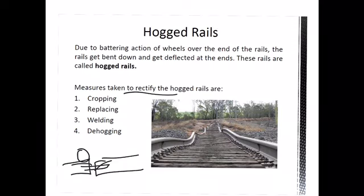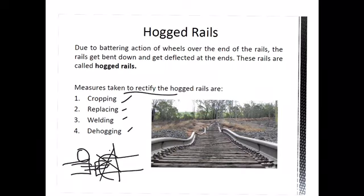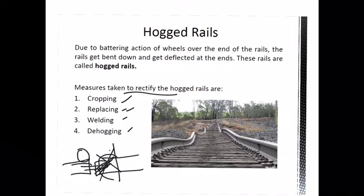The remedial measures to rectify hogged rails include: cropping, replacing, welding, and dehogging. In cropping, the hogged part is cut off and fresh holes are made for fixing new fish plates. In replacing, the hogged rail section is replaced with new rails, though this is highly uneconomical. In welding, the hogged rails are brought to level by welding over the worn-out or bent portion at the ends. The last method, dehogging, involves straightening the ends using equipment called a jim crow or dehogging machine.